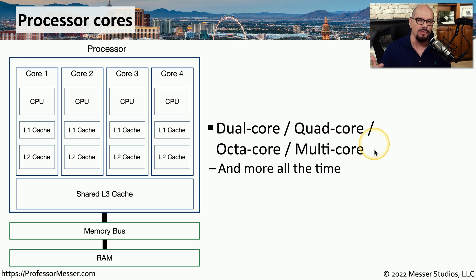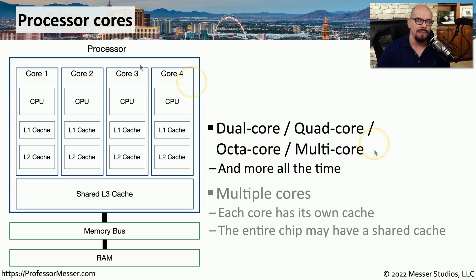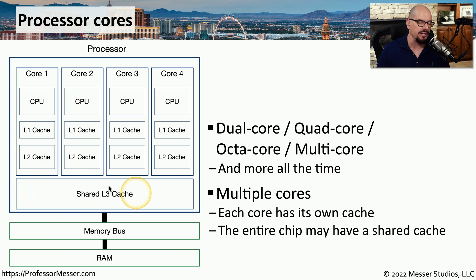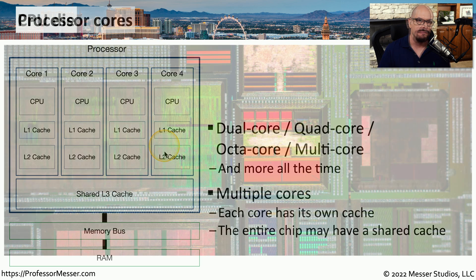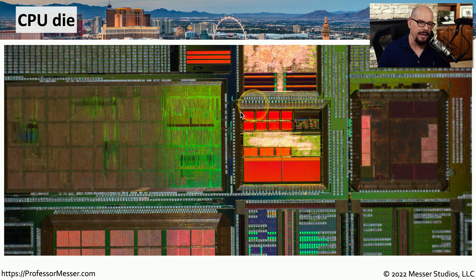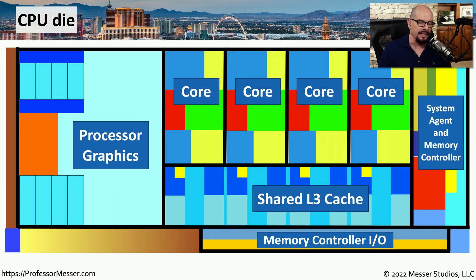Newer processors are increasing the number of cores all the time. It's also not unusual for the multiple cores to have multiple caches — these might be dedicated for a single core, or there may be shared caches used across all of the cores. These caches are designed to help speed the processing of information into and out of the CPU. If you look at a close-up of the CPU itself, you can almost make out where the different components are. You can even see individual cores, a shared cache between all the cores, and CPUs today also tend to have their own memory controllers and graphics processors built into the same CPU hardware.